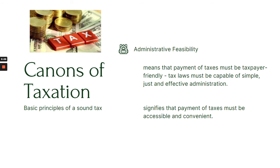The second canon is administrative feasibility. Administrative feasibility means that payment of taxes must be taxpayer-friendly — it should not be burdensome to the taxpayer. It should be simple, accessible, and convenient. For example, if you are employed, you don't necessarily have to file your taxes yourself — your employer will withhold and collect the tax and process it for you. So it becomes easier and more convenient to pay. Tax collection should be convenient and accessible to taxpayers.